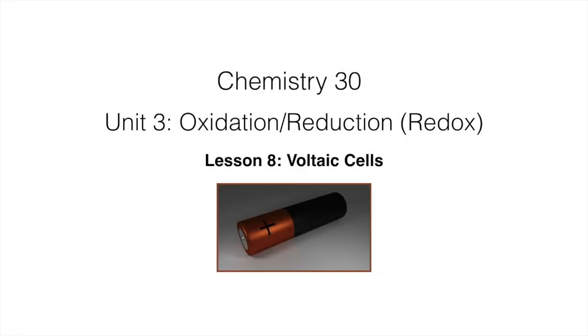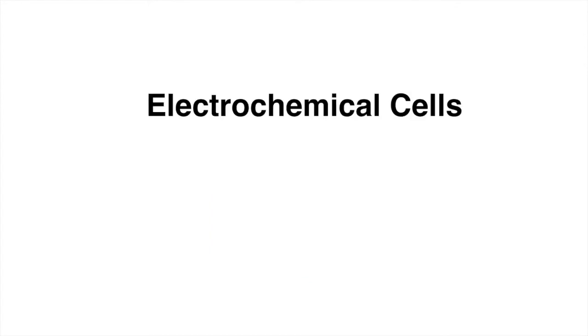Hello students, welcome to this lesson on Voltaic Cells. The first thing we have to do is understand this term electrochemical cells, which are really devices that deal with electricity and chemicals at the same time. There are two types of electrochemical cells, Voltaic Cells and Electrolytic.